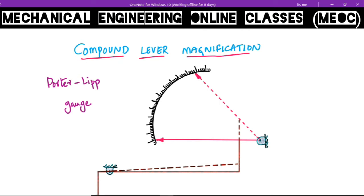Coming to the next type of strain gauges, which is the compound lever magnification strain gauge, under which the first type is the Porter-Lipp gauge. It comes under compound lever magnification system because these type of strain gauges employ more than one lever.